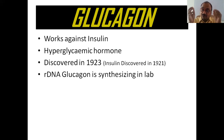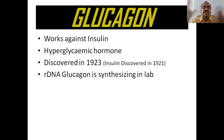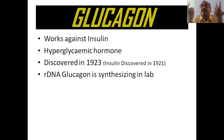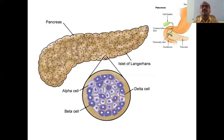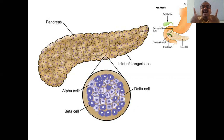Not only can glucagon be obtained naturally — in the lab you can also prepare it by using recombinant DNA technology, that is, biotechnology. You can synthesize the glucagon hormone in the lab using rDNA technology. Naturally, glucagon is released from the pancreas, which is a very important organ in our body.